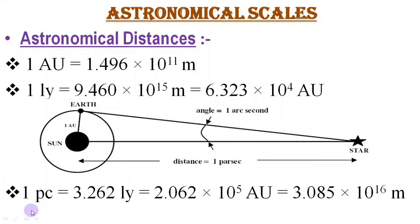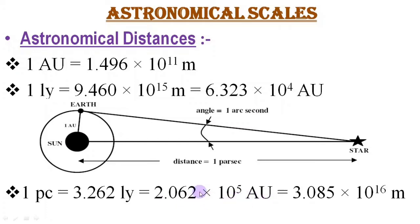Numerically, one Parsec is equal to 3.262 light years. In terms of Astronomical Unit, one Parsec is equal to 2.062 × 10⁵ Astronomical Units, or one Parsec can be written as 3.085 × 10¹⁶ meters.